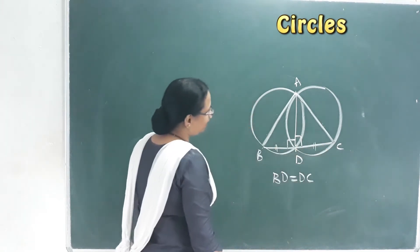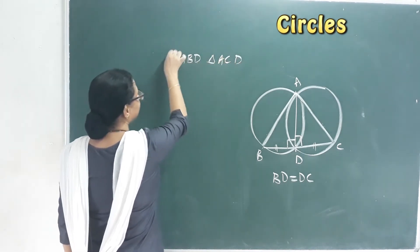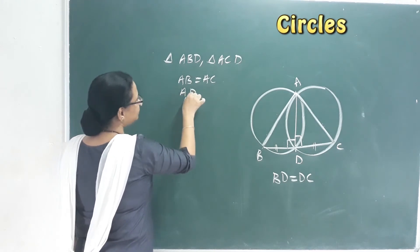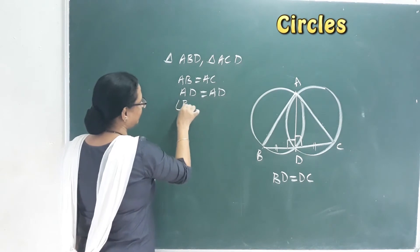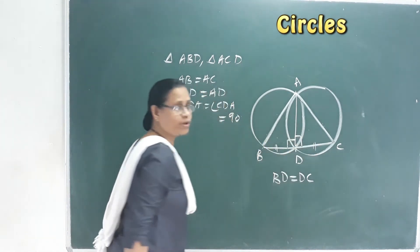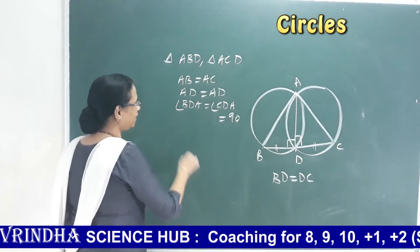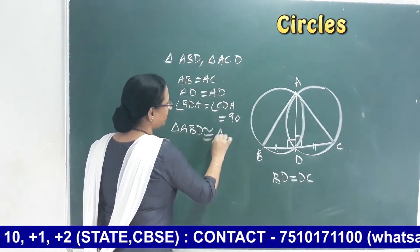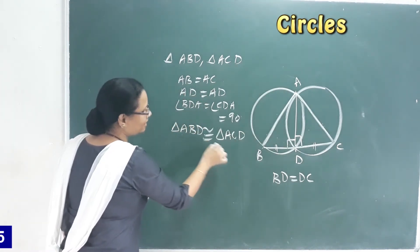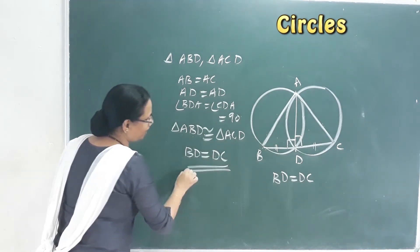Considering triangles ABD and ACD: AB equals AC because it is an isosceles triangle. AD equals AD as the common side. Angle ADB equals angle ADC equals 90 degrees. So these two triangles are congruent. Therefore BD equals DC, proving D is the midpoint.